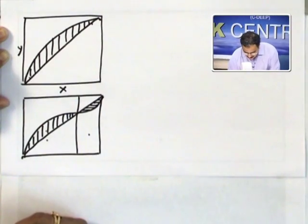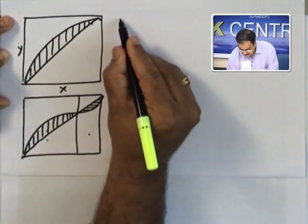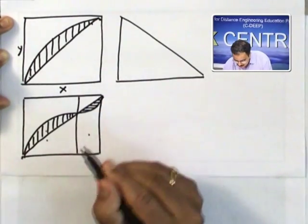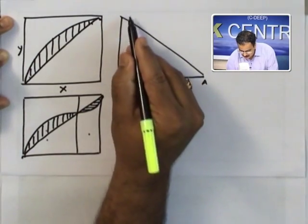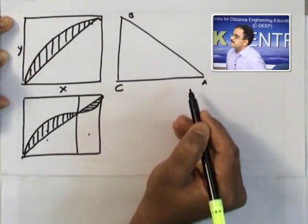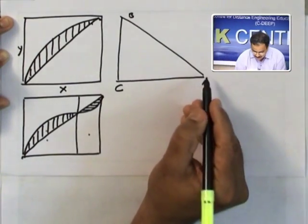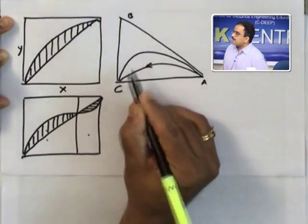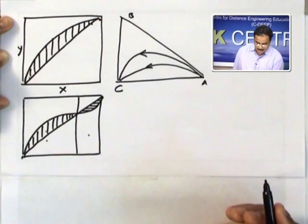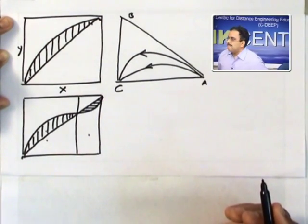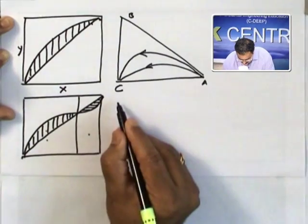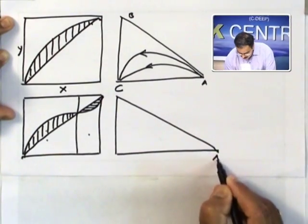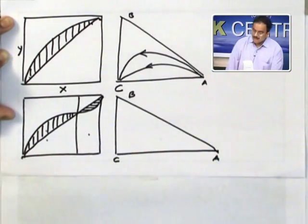Now, in a ternary system, there is no azeotrope. I can go from this point to this point. So I have residue curves going from the most volatile component to the least volatile component — no boundary. Suppose you have formation of an azeotrope. Now let us consider only one azeotrope — one binary azeotrope. This is your A, this is your B, this is your C.